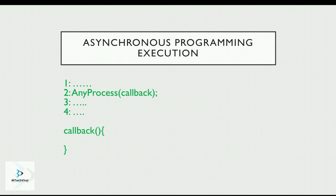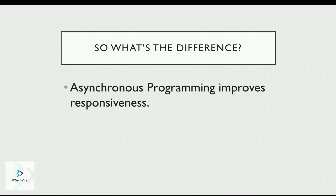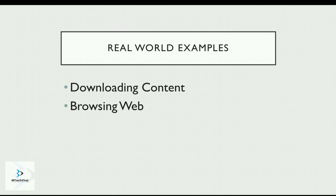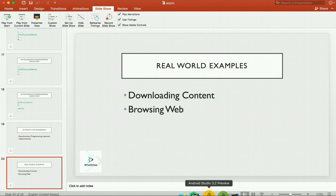The main advantage of asynchronous programming is that it improves the responsiveness of your program. A real-world example: when browsing YouTube you can download content offline, and by that time you can continue watching your video and do other things. That's possible because of the asynchronous model — the downloading is not blocking anything. Similarly, when browsing the web you can do many things at once without waiting for something to complete.